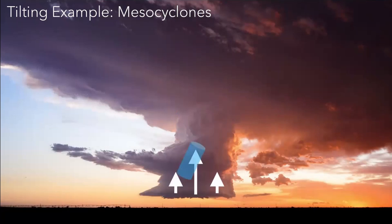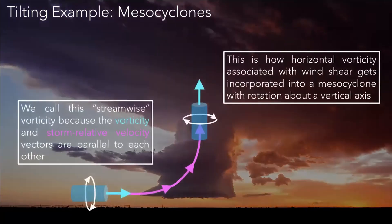As this vorticity enters the storm, it is forced to orient into the vertical because it's encountering stronger and stronger updraft. Eventually, once it gets to the center of the updraft where it's at its strongest, it is oriented vertically or close to it. We call this streamwise vorticity. It's called streamwise because the vorticity sort of follows streamlines in the flow — that's where the terminology comes from.